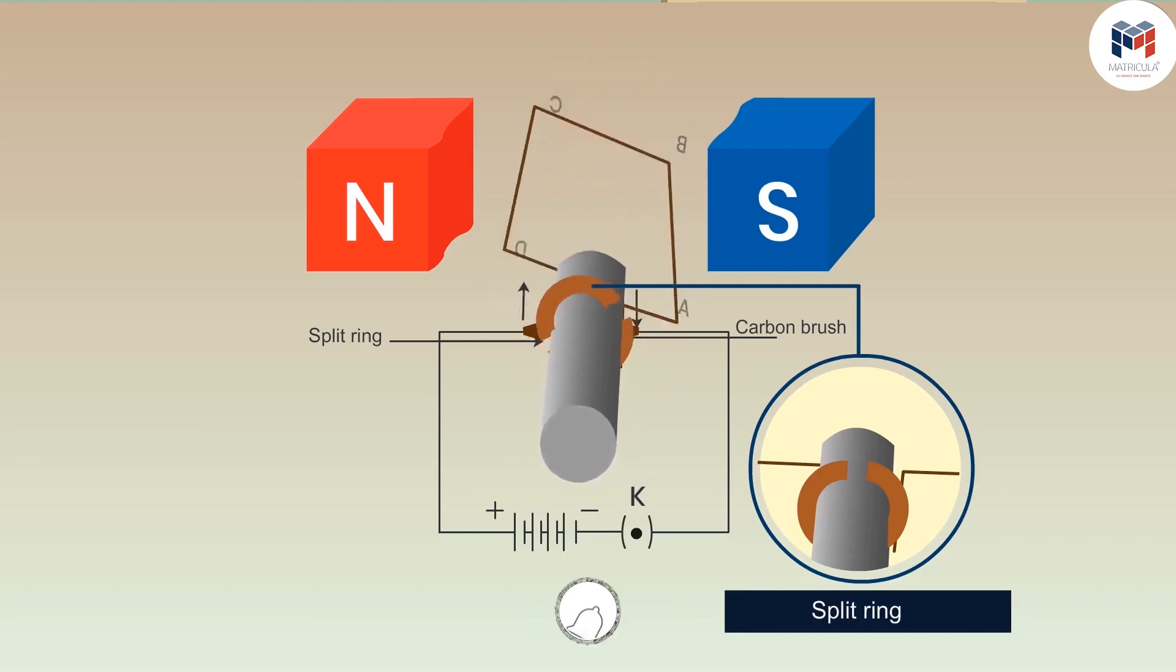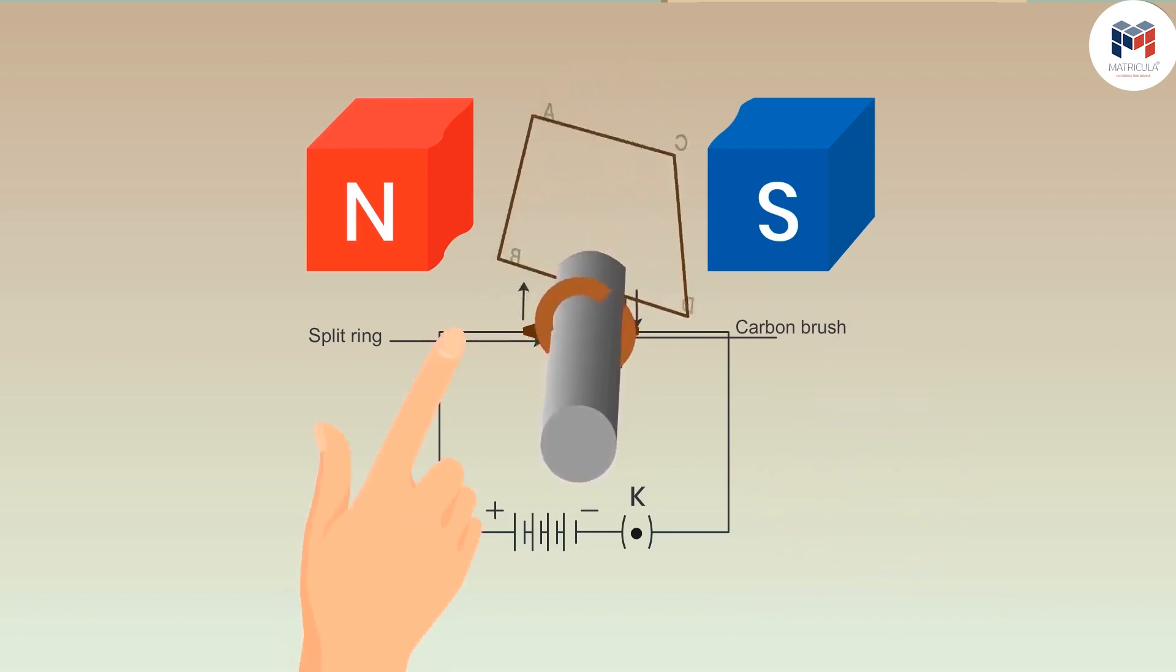Split ring is a special kind of ring which has two halves. The ends of the coil are connected with these halves which are then connected to the circuit with the help of carbon brushes which helps to keep the flow of electric current in one direction only in the circuit.